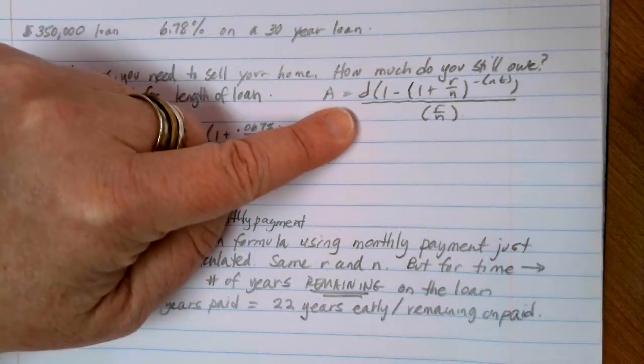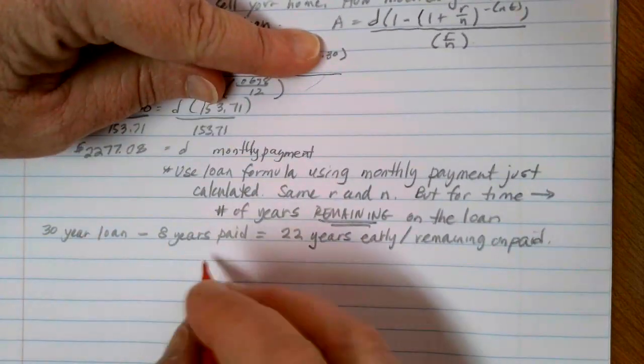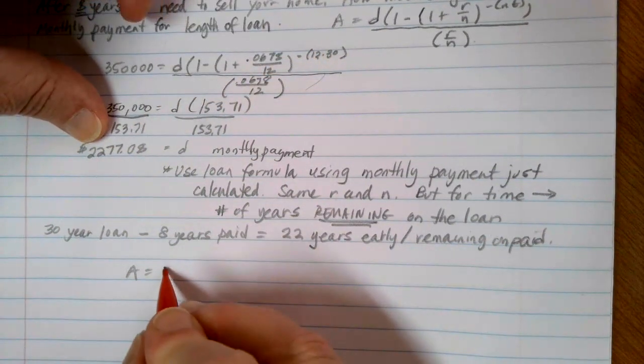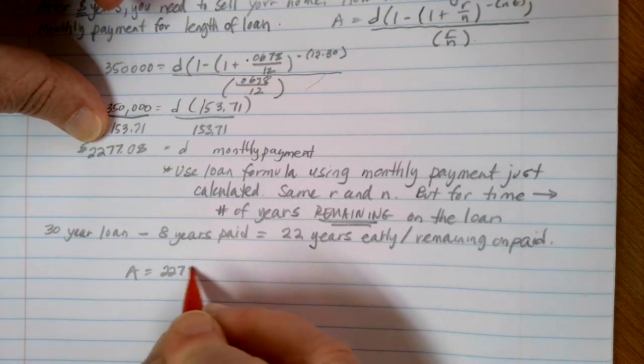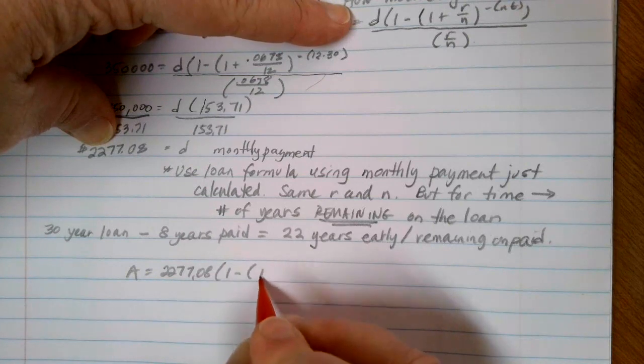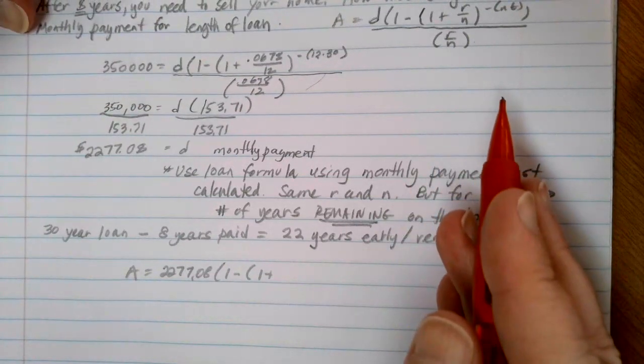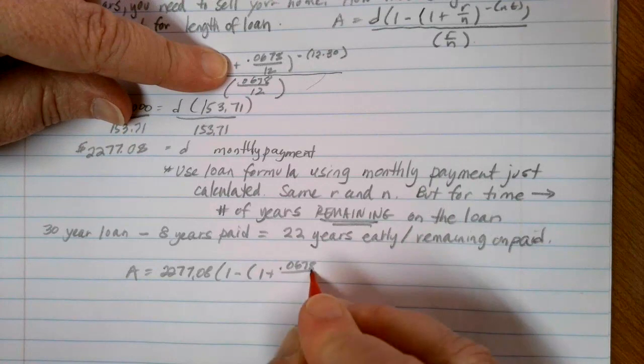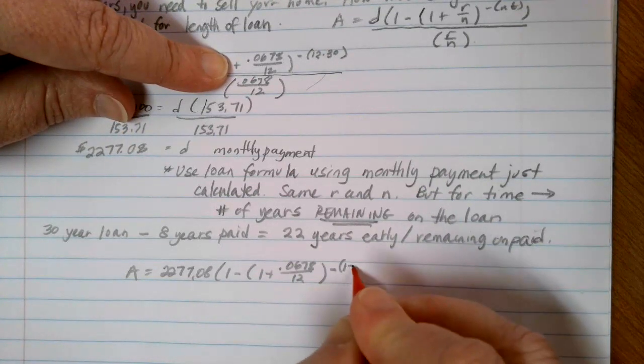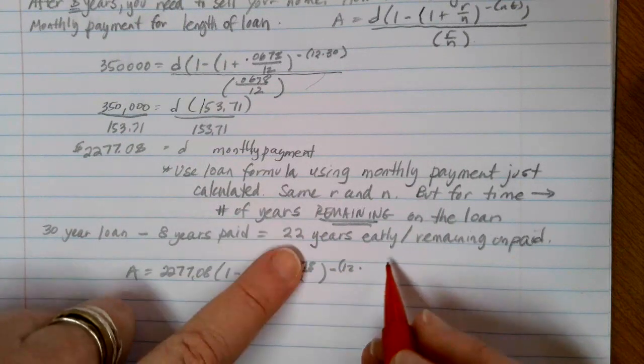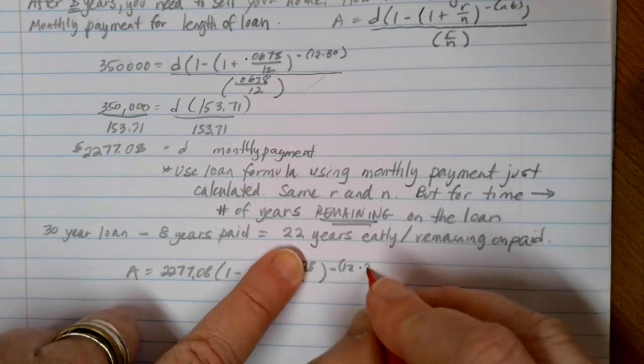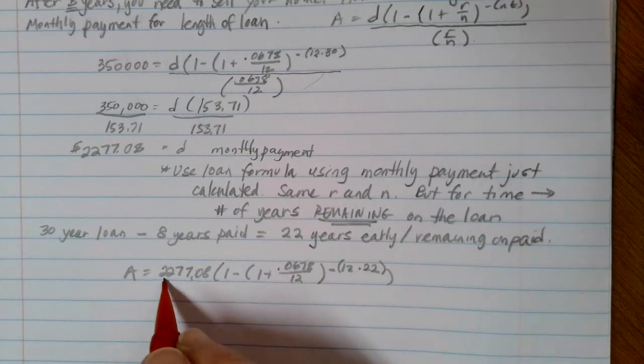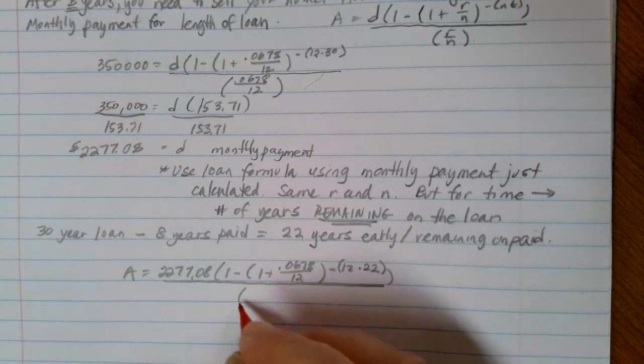All right, so we're going to go back to our loan formula here. This time, we're going to be looking for A, the amount of the loan or the amount left on the loan, technically here. We're going to use the monthly payment that we've been using. So that $2,277.08 times one minus one plus, I'm still dealing with the 6.78% on a 30 year loan and monthly payments. So this is going to be 0.0678 over 12 to the negative 12 times. But this time, instead of the time being 30 years, we want to figure out what the amount is when there's 22 years remaining. So again, this is time remaining on the loan. Close that parentheses out and divide the whole thing by that 0.0678 over 12.